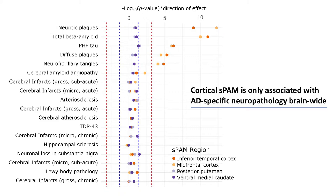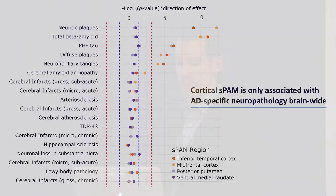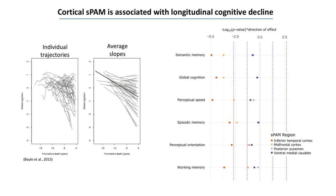Taking stage three microglia alone, effects aren't as strong, and they're not associated with other pathologies like TDP-43. For cognitive decline — the longitudinal measure of cognition slope leading to death — cortical SPAM is associated with cognitive decline across all tested domains, though not quite as significantly in the midfrontal cortex as in the temporal cortex, which we'd expect since the temporal cortex is first susceptible to neurodegeneration in Alzheimer's disease.